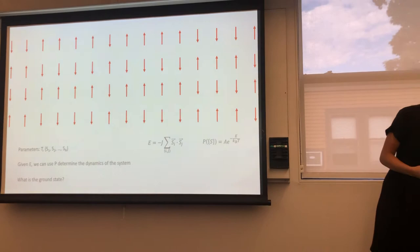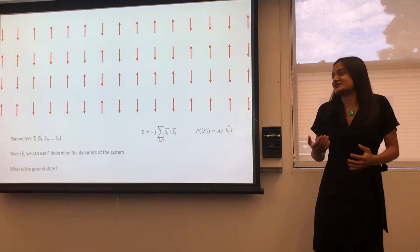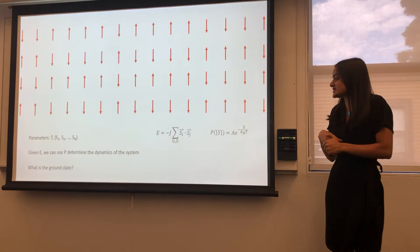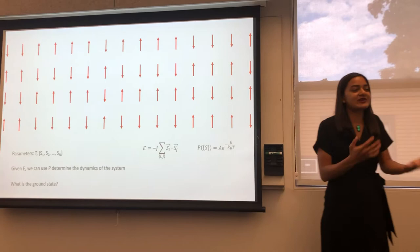And so the parameters of our system are going to be temperature and n spins, which can either point up or down. And so now we can think about what a good way in which these spins can interact is. And we specify that by specifying this energy term here, which is kind of like, so the angle brackets represent a sum over nearest neighbors. So you're really doing a dot product of all of the nearest neighbors in your system.